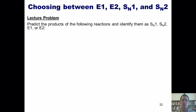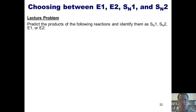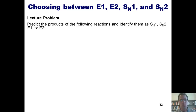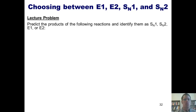Everything we've been learning in my previous videos on Chapter 8's coverage of substitution and Chapter 9's coverage of elimination has been leading us to this destination. We now have the ability to determine if any given substitution or elimination reaction will proceed through an SN1, SN2, E1, or E2 mechanism. That is the question we're going to answer for the ensuing examples: predict the products and identify them as SN1, SN2, E1, or E2.